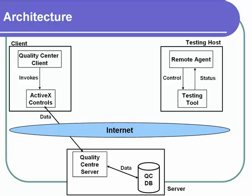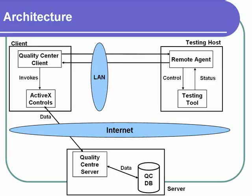The machine is called the testing host. The remote agent in the testing host enables the client modules on the client machine to control the application, giving Run, Stop, and other parameters, and gets the testing status from it. The Quality Center API is used by the testing application to update the Quality Center server database with test running and its results.